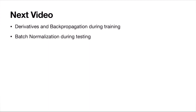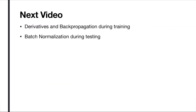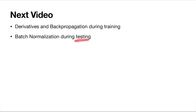In the next video, we will see the derivative of the batch normalization layer, how back propagation works, how weight updates happen for gamma and beta parameters, and what happens during testing — because during testing you may send only one image at a time without a batch, so the mean and variance calculation differs. We will cover those details in the next video. Thank you.